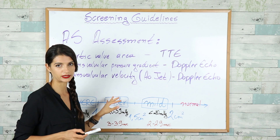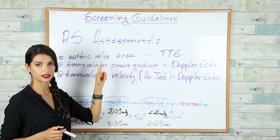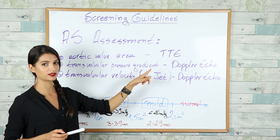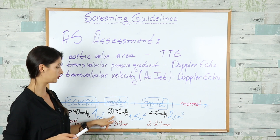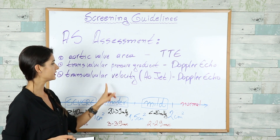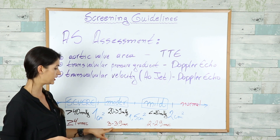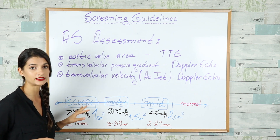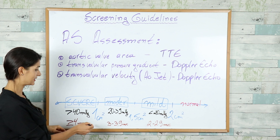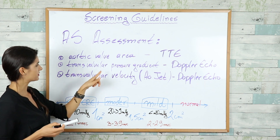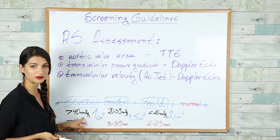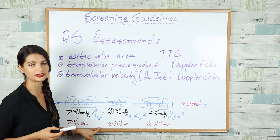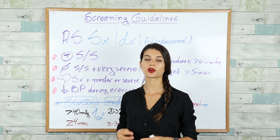In moderate aortic stenosis, the aortic valve area will be 1 to 1.5 square centimeters, the pressure gradient will increase to 20 to 39 mmHg, and the aortic jet will also increase to 3 to 3.9 m/s. Severe aortic stenosis is characterized by an aortic valve area less than 1 square centimeter, a trans-valvular pressure gradient more than 40 mmHg, and an aortic jet equal to or more than 4 m/s.